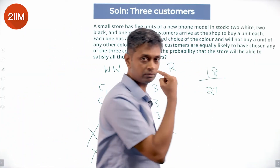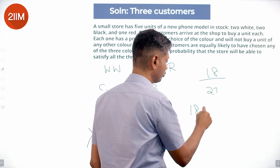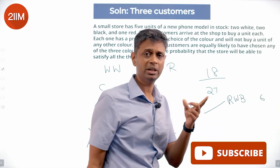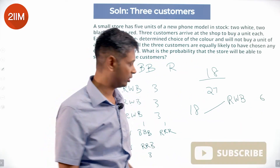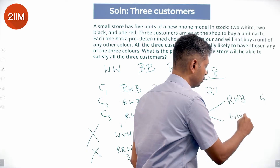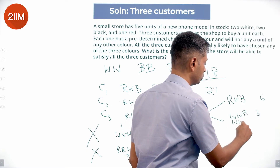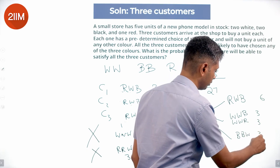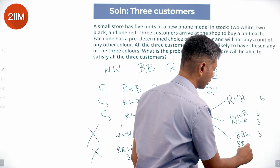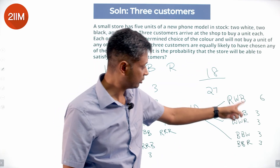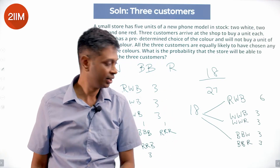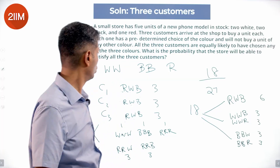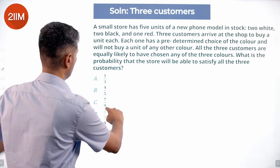The 18 possible combinations are: the 6 all-different arrangements (RWB etc.), plus two-whites-and-black (3 ways), two-whites-and-red (3 ways), two-blacks-and-white (3 ways), two-blacks-and-red (3 ways) — that's 6 + 3 + 3 + 3 + 3 = 18. So 18 out of 27 work, and 9 out of 27 don't. The probability is 18/27, which simplifies to 2/3.